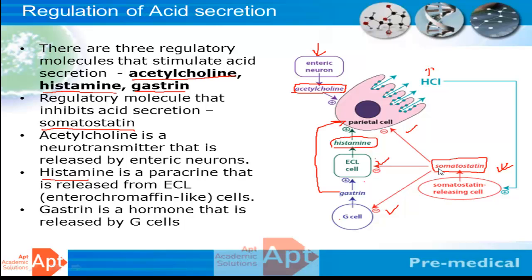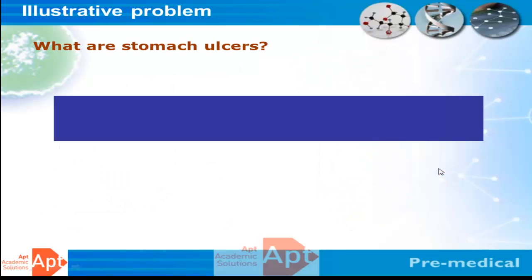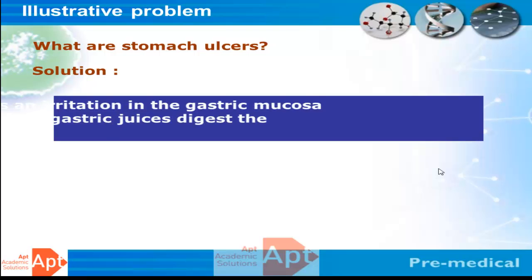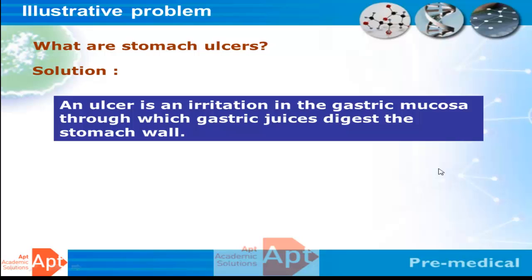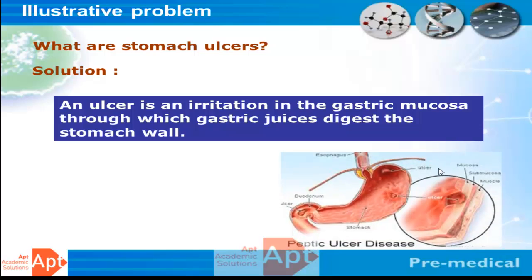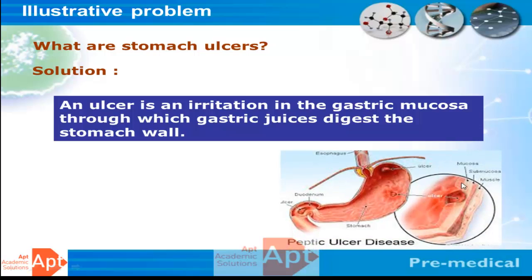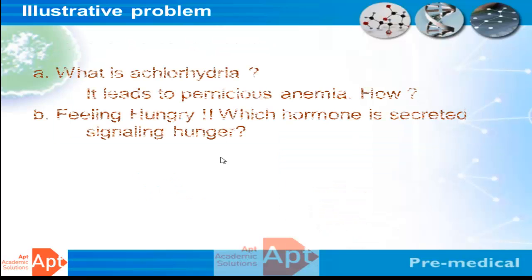There are specific diseases that occur in the stomach. Ulcers involve irritation of the gastric mucosa, through which gastric juice erodes the stomach wall, causing ulceration. With over-activity of enzymes, the wall gets corroded — this is popularly known as peptic ulcer or peptic ulcer disease (PUD).